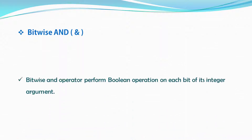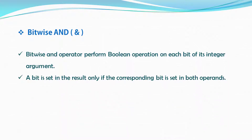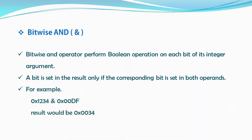First, the bitwise AND operator. The bitwise AND operator performs a boolean operation on each bit of its integer argument. A bit is set in the result only if the corresponding bit is set in both operands. For example, we have two operands here with hexadecimal values. When you execute this statement, the result would be this. We specify four bits for the first operand and two bits for the second operand, and the AND operator returns only two bits as a result because we equally set two bits on the operands.